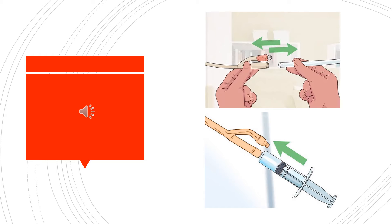Number five, place the client in a semi-reclining position with a towel underneath the catheter tubing or the buttocks if possible. Number six, put on clean gloves. Number seven, cleanse the junction of the catheter and the drainage tube bag thoroughly with the alcohol-soaked pad.